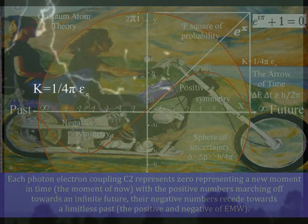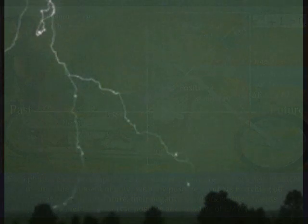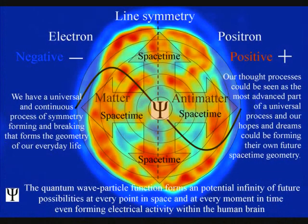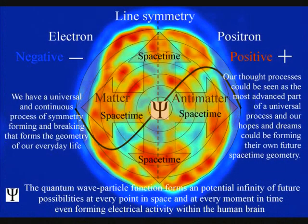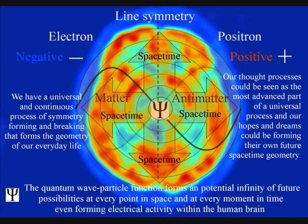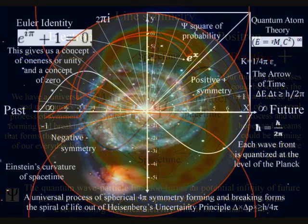In this theory, electrical potential and the individual's future potential are the same within their own reference frame. The most advanced part of this universal process is in the form of electrical activity in the brain, being able to comprehend and measure this process as the flow of time with a past and uncertain future.